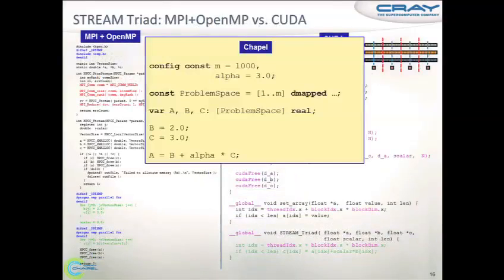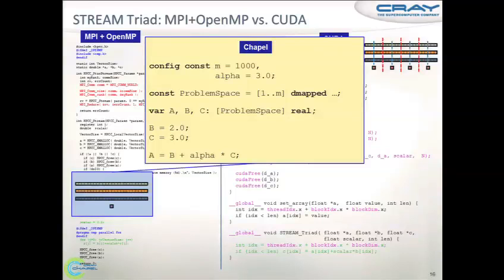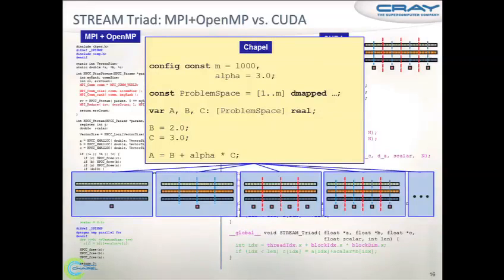This is what Chapel code looks like for stream. There are some parameters and variables for initialization and the actual computation. If I tell you that square brackets denote an index set from 1 to m, and that a, b, and c are arrays, you can probably figure out what's going on. Where Chapel really steps in is that you can take this code and run it in a variety of different ways: as a serial computation, parallelized, with distributed arrays, a mix of those, and probably several others.